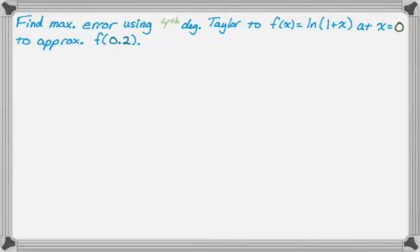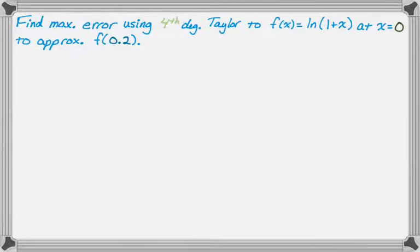We want to find the maximum error using the fourth degree Taylor polynomial for f of x equals the natural log of (1 plus x) at x equals 0, so we're centering it at x equals 0, and we're going to approximate f of 0.2. So we have the center of 0, the value we're plugging in is 0.2, and a fourth degree polynomial.